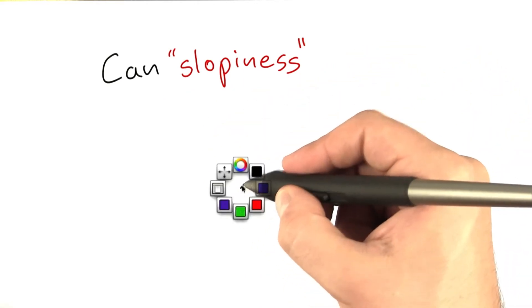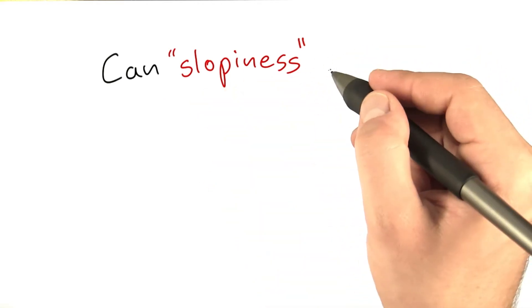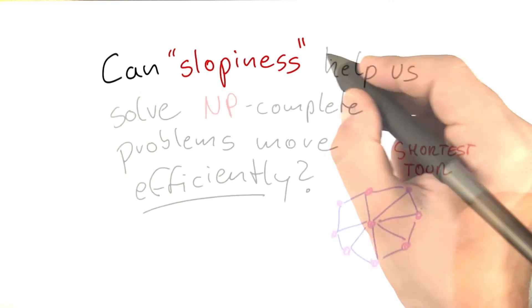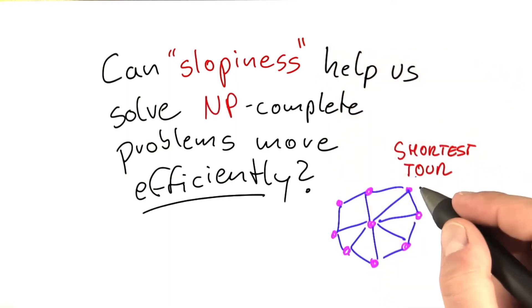What we're going to look at in this unit is if sloppiness, or at least allowing for a bit of leeway, can actually help us solve NP-complete problems more efficiently.